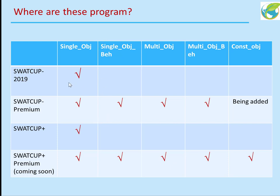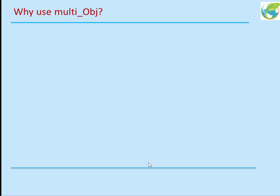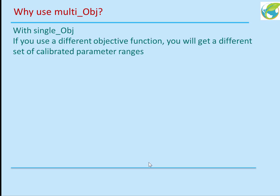Regarding which programs offer these options: SWATCOP 2019 has single objective only, for one or multiple variables. SWATCOP Premium has single objective and multiple objective, and the constrained objective is currently being added. SWATCOP Plus, recently released, has single objective for one or many variables. SWATCOP Plus Premium, which is under development, will have all of these options and hopefully will be coming soon.